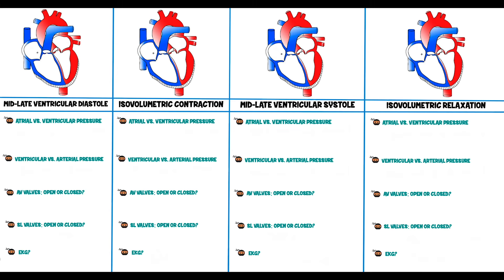Today we're going to talk about the cardiac cycle. As you can see here, we have a picture set up — if you want to follow along, there's a link in the description to download it. We'll go through each individual phase. On average, the cardiac cycle is about 0.8 seconds, which is amazingly fast for blood to flow through the heart and great vessels.